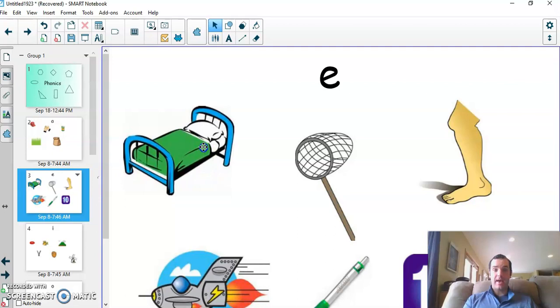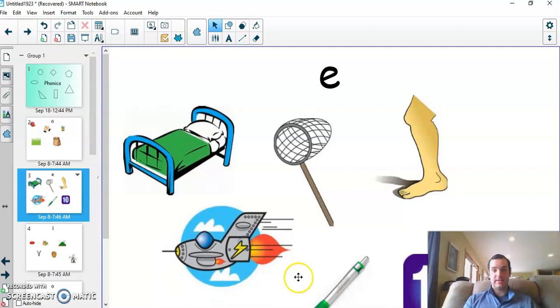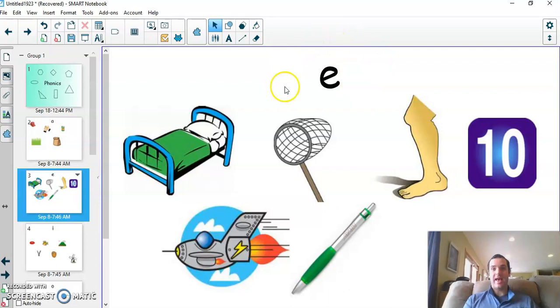We have the short e sound, which is bed, net, leg, jet, and we have t-e-n, so it's an e sound.